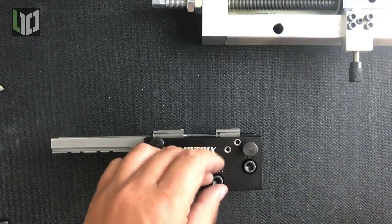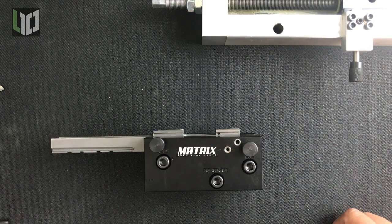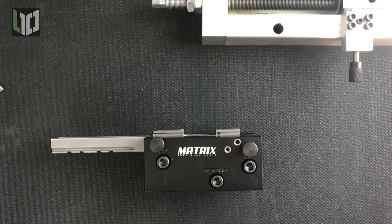Drop the remaining two allen screws in and use the provided allen key to tighten them. Note that there is an order on which screws to tighten first. This order is engraved onto the fixture.